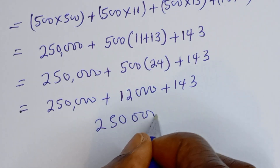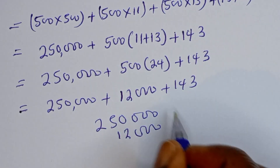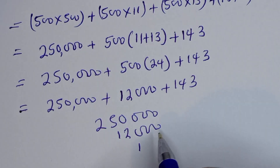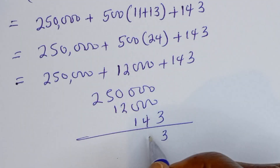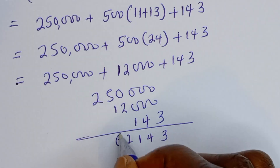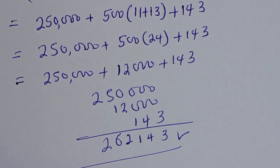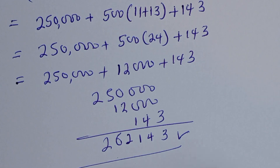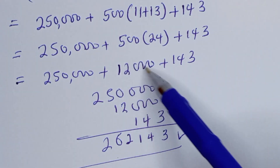Now adding everything together: 250,000 plus 12,000 plus 143 gives us 262,143, and this is the final answer. Thank you for watching — don't forget to like, share, comment, and subscribe to my channel. Bye bye!